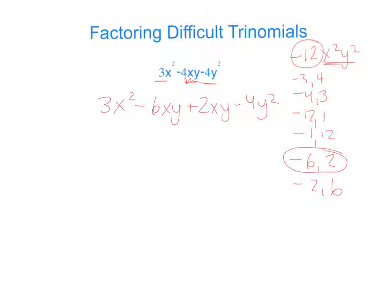Now we say, out of these first two terms, what do we have in common? We have a 3 and an x. We are left with an x minus 2y.